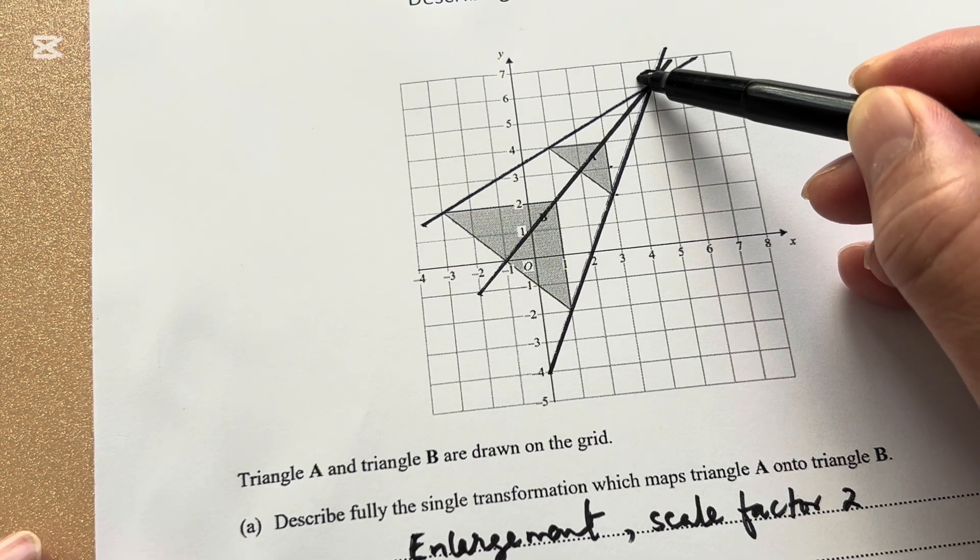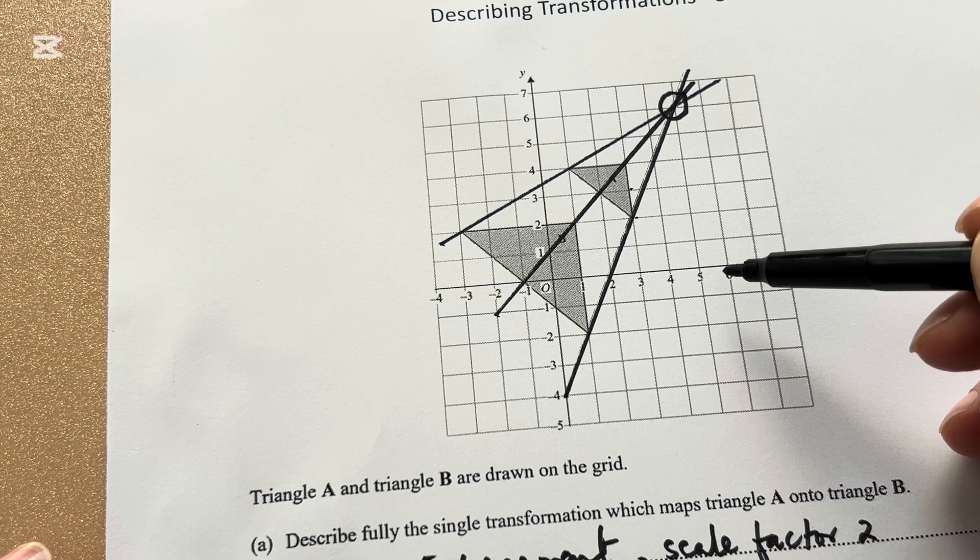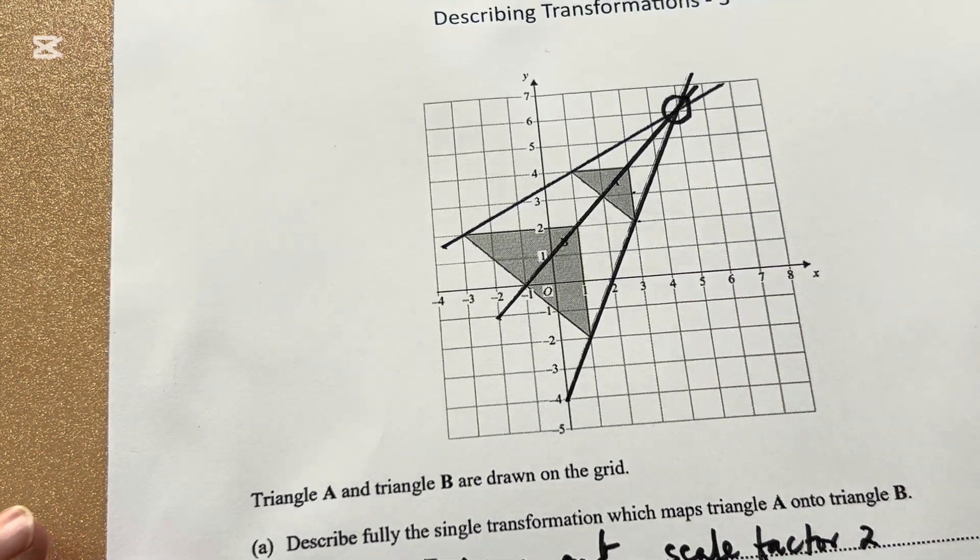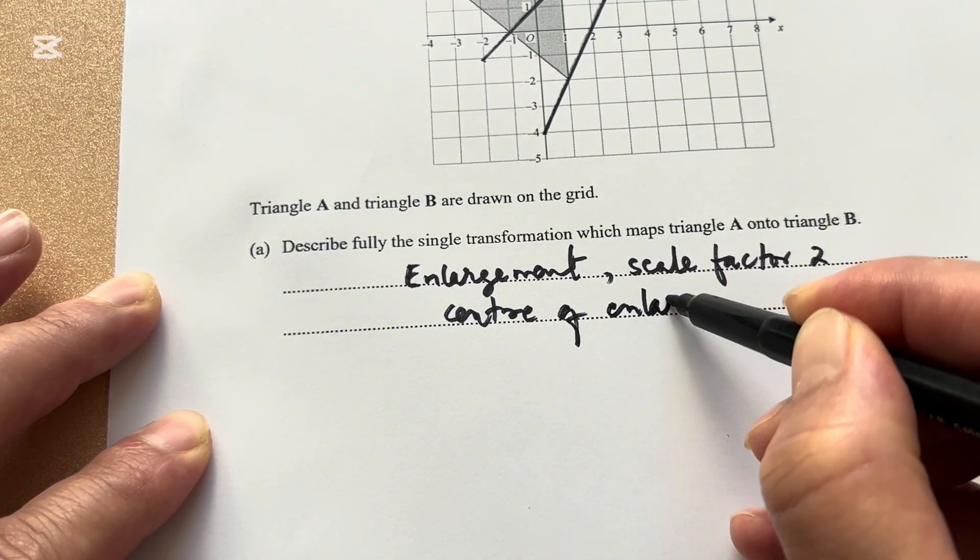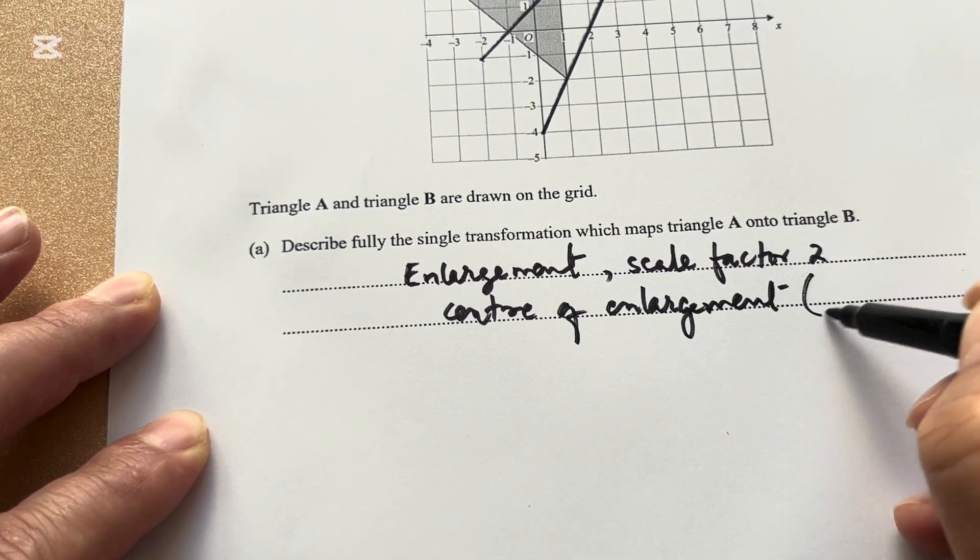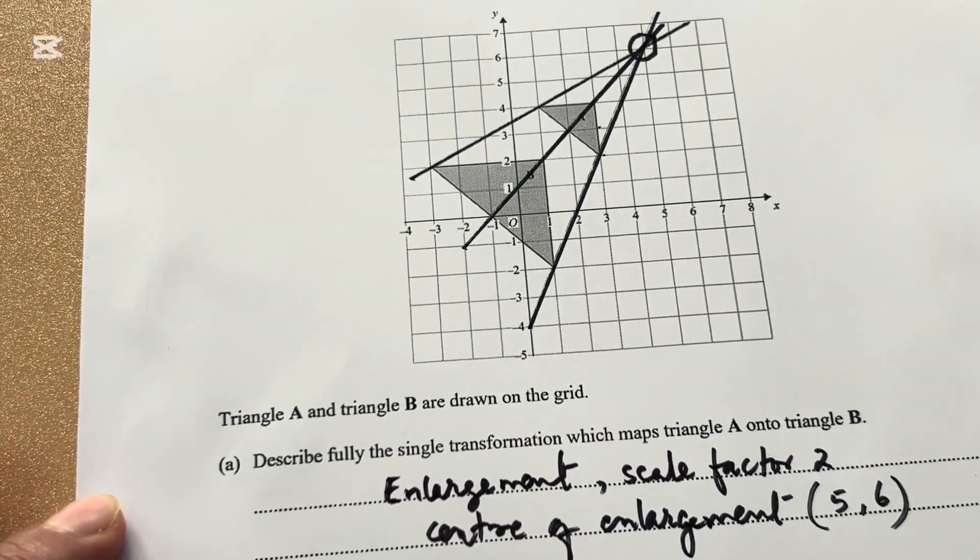Three lines meet at this point. That is our center of enlargement, which is 5, 6. Center of enlargement is 5, 6. Thank you very much.